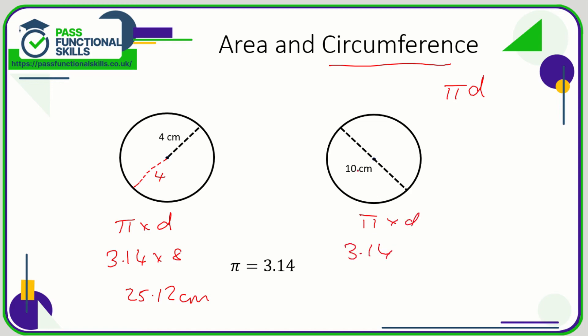In the second example, pi times the diameter is 3.14 multiplied by the diameter of 10, which gives 31.4 centimetres. The key things to remember: the formula for area is π r², and for circumference it's pi times the diameter.